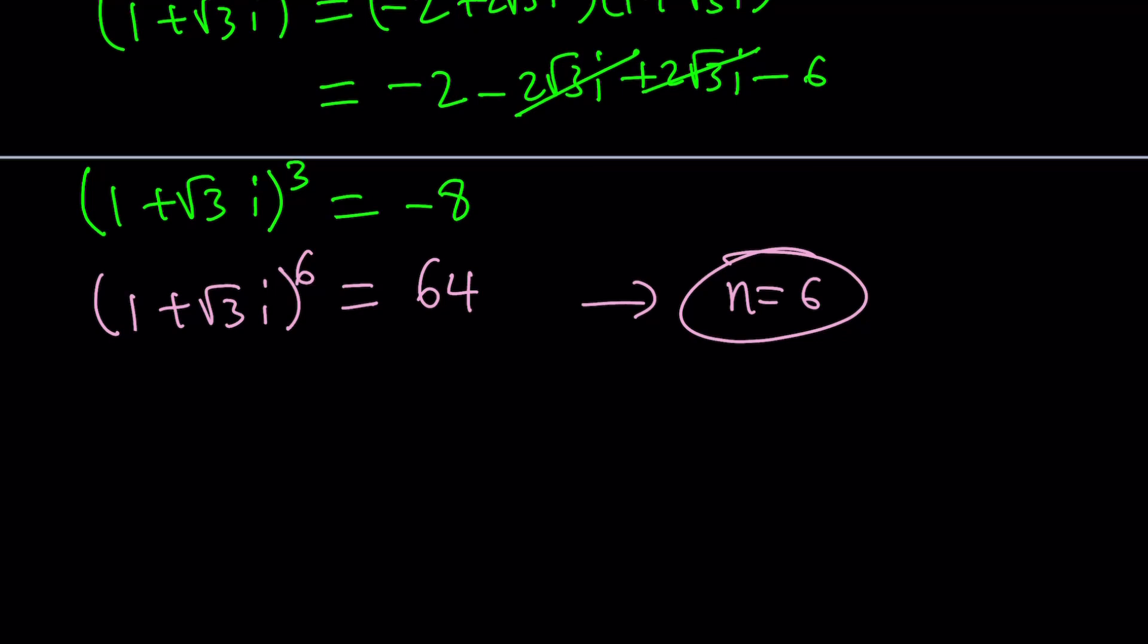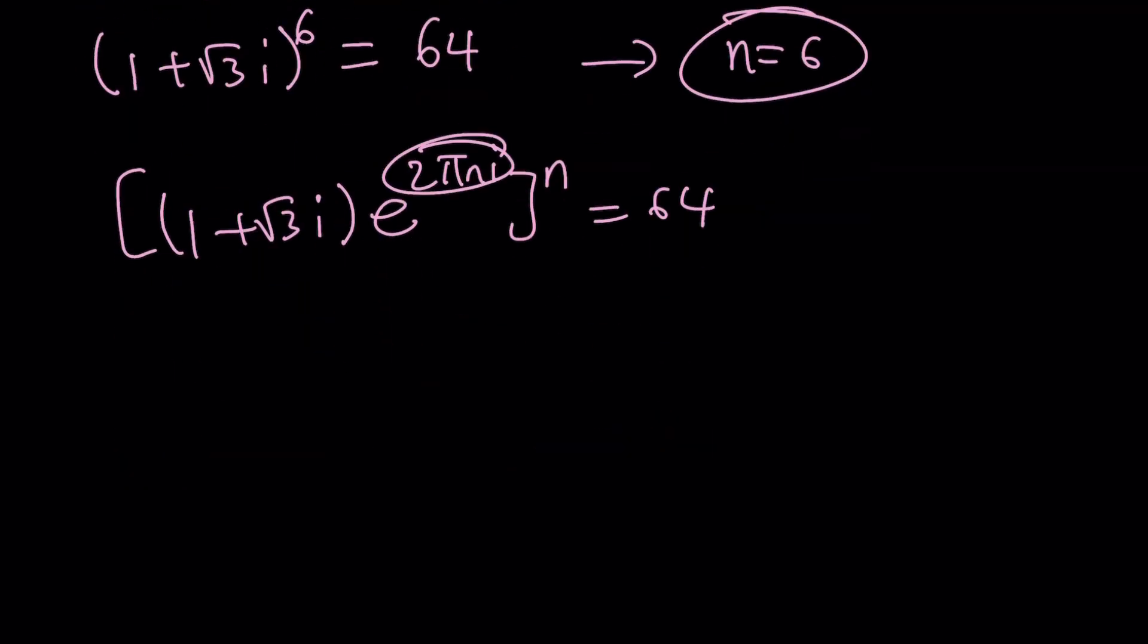But the million dollar question is is that the only solution? Can there be something else that would multiply 1 plus root 3i to another power and we should be getting 64? Now in some cases you could probably get away with something like this. Maybe I can take 1 plus root 3i and then multiply it by e to the power 2 pi n i which is 1 in the complex world and then maybe raise it to the power n but that's not really going to help you. Anyways this is just by guess and check. Let's go ahead and take a look at the second approach.